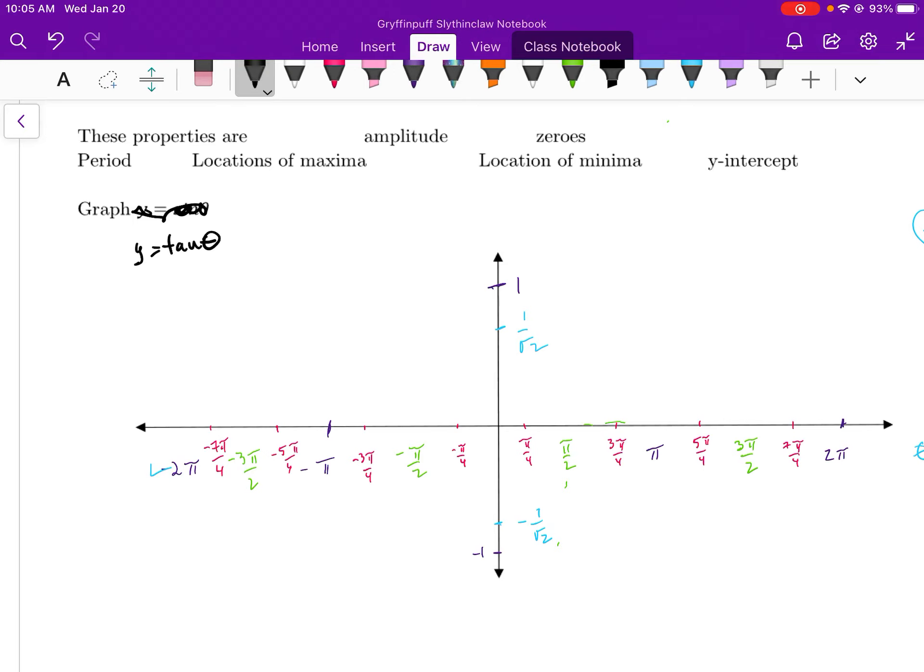So for our last video of the waves and curves, we're going to do the tan curve. As you saw from the previous video, it's called a curve because it's not a wave. It is a different beast altogether.